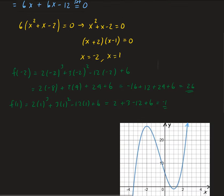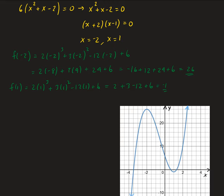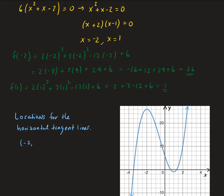So the two points — the locations for the horizontal tangent lines — are the point (−2, 26) and the point (1, −1). You can see that here from the graph: here we have negative 1 on the y-axis, and minus 1 is located here.